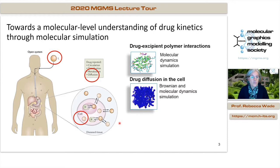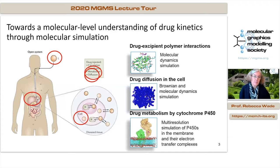Drugs also have to diffuse to their targets in the cell, meaning they need to go through the cellular environment, which can be very crowded with macromolecules. For this we use Brownian and molecular dynamics simulations. Drugs also have to be metabolized and gotten rid of, and one of the key enzymes for this is cytochrome P450 found in the liver. We've spent a number of years modeling P450s, recently focusing on multi-resolution simulation approaches to model how P450s interact with their electron transfer partners in membranes.